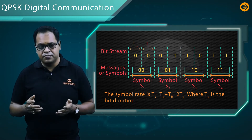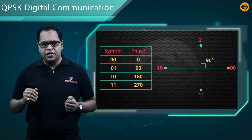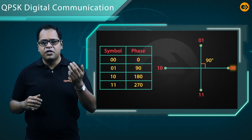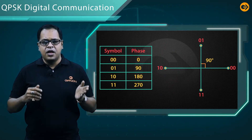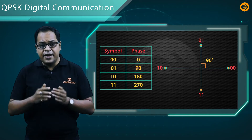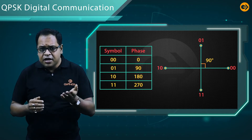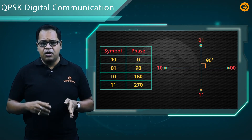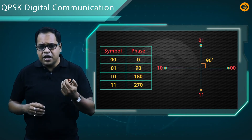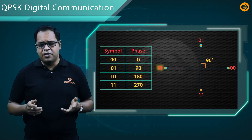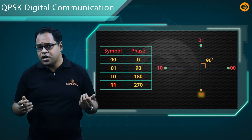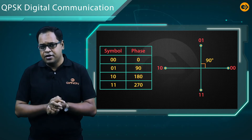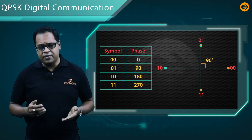The phase of QPSK is 0 degrees for 00, it is 90 degrees for 01, it is 180 degrees for 10. What is the case for 11? It is 270 degrees.